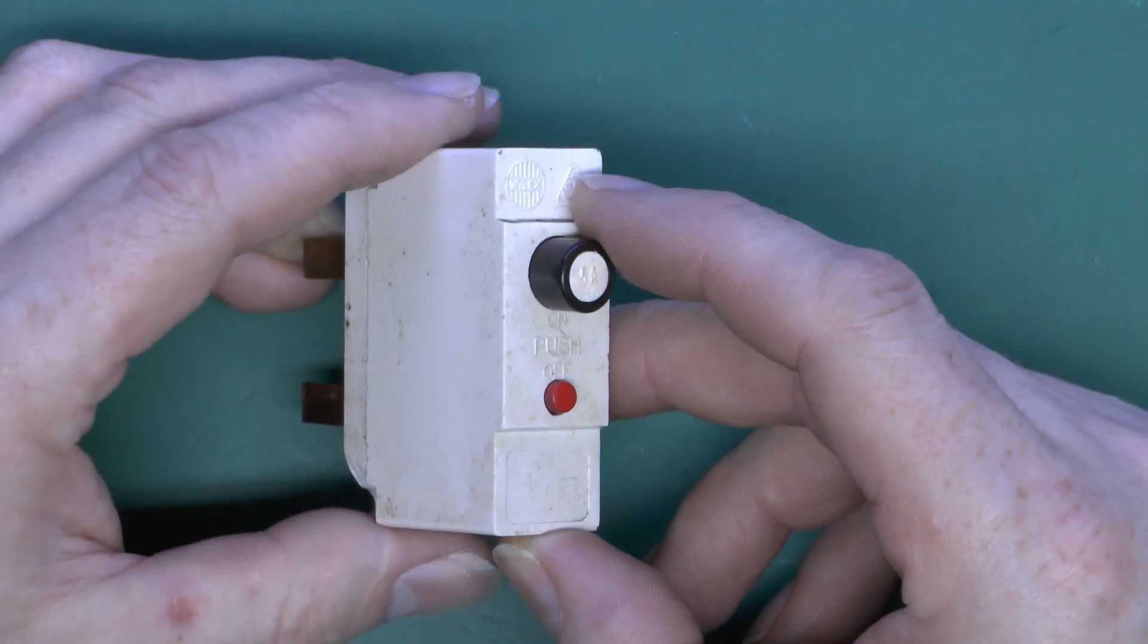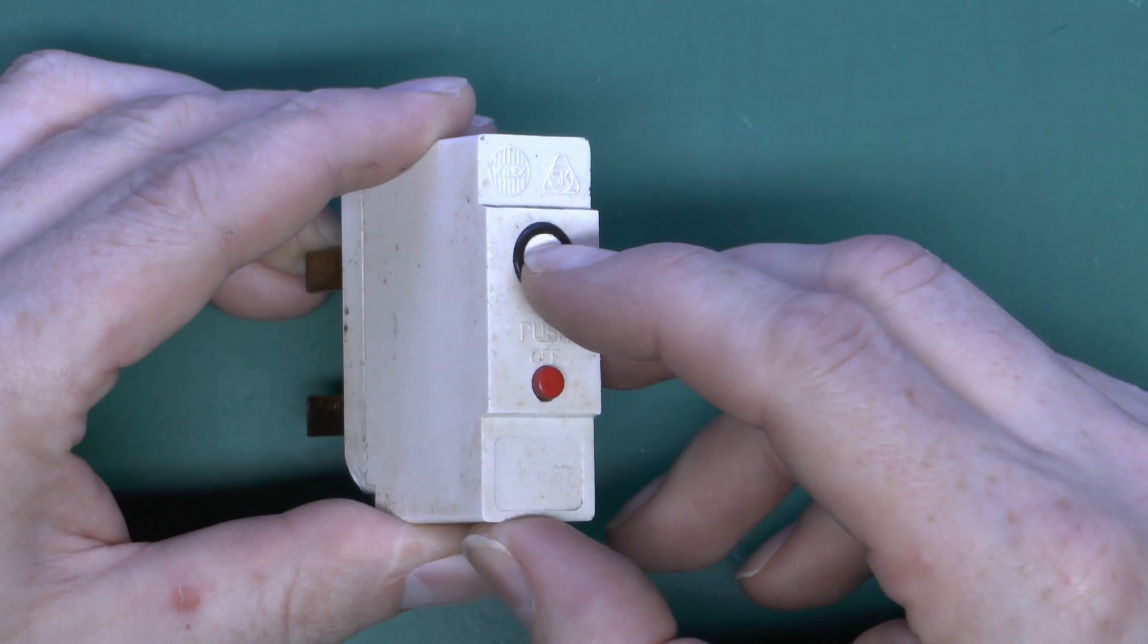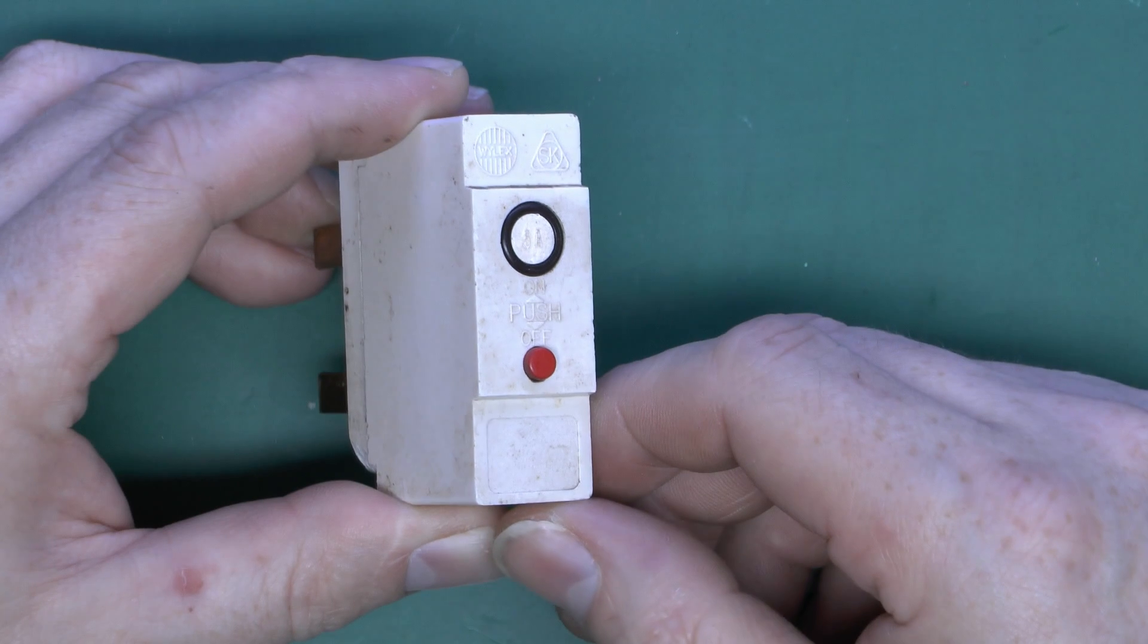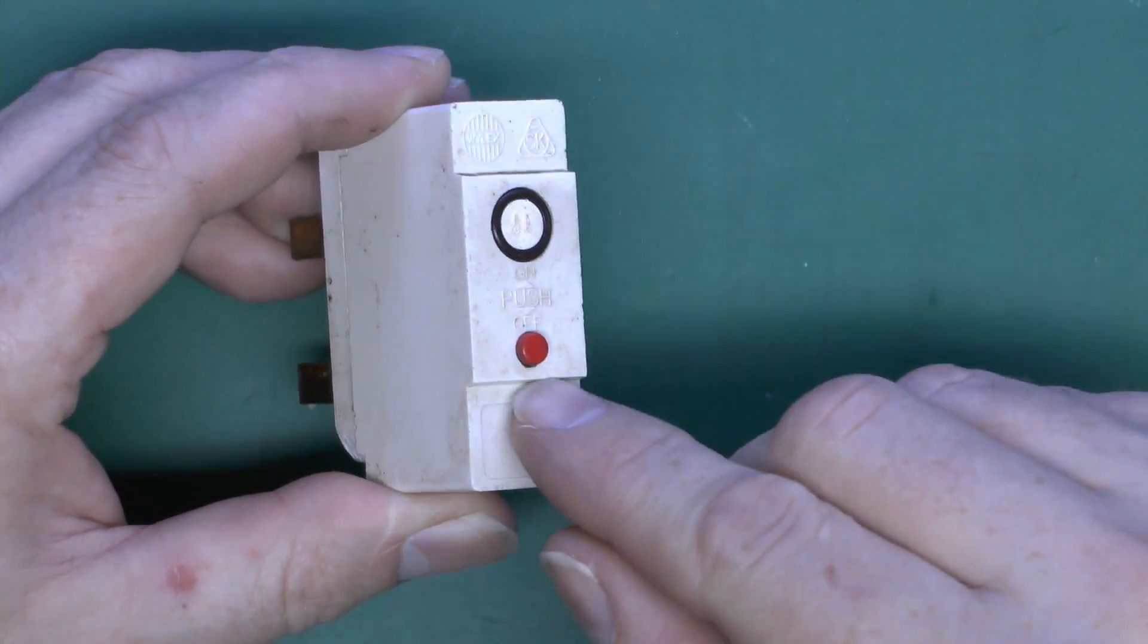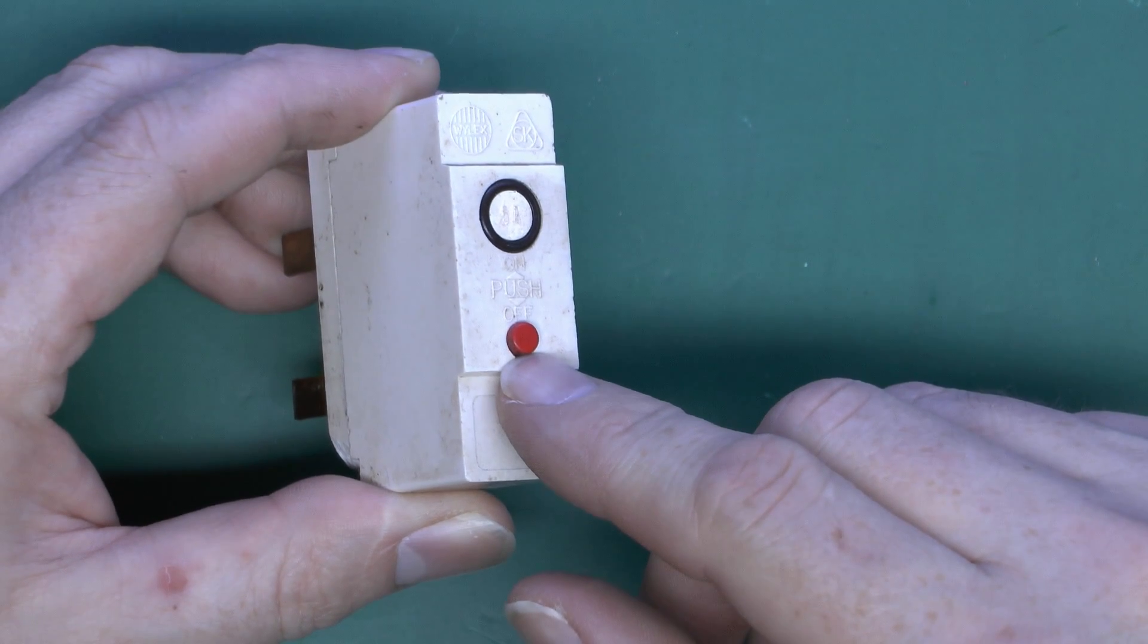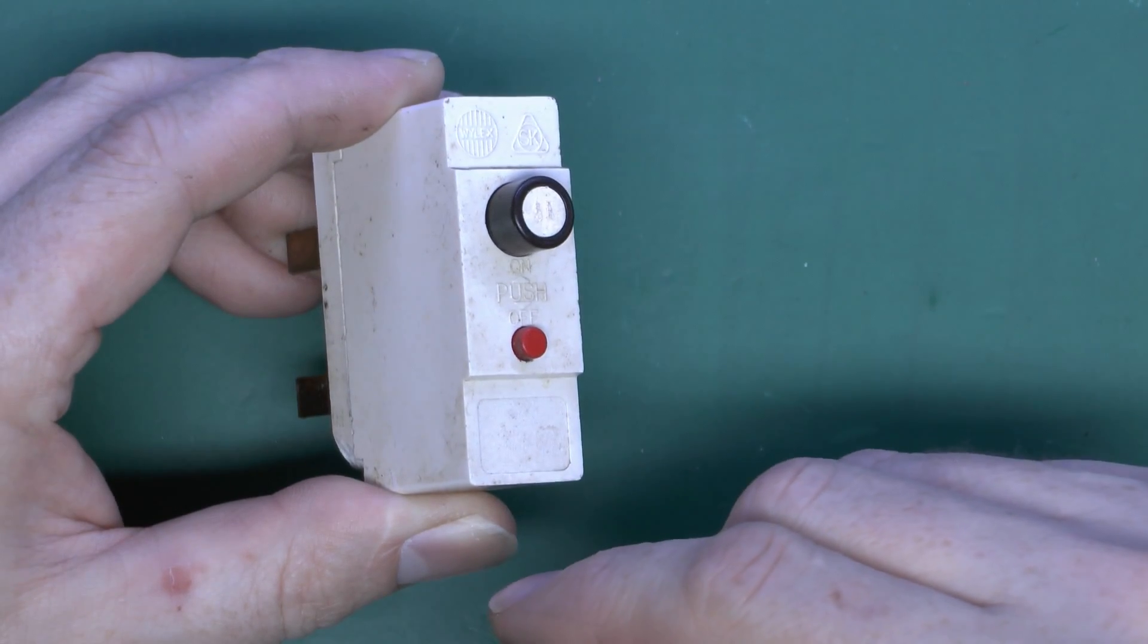You could get these as allegedly an upgrade to the original fuses, but really the only benefit was they were much easier to reset, not particularly any kind of upgrade in terms of safety. And one problem with these is the little red button protrudes there, so when you had this under your stairs and there was loads of coats and other junk hanging up, anything that just brushed against this would of course cause it to switch off.